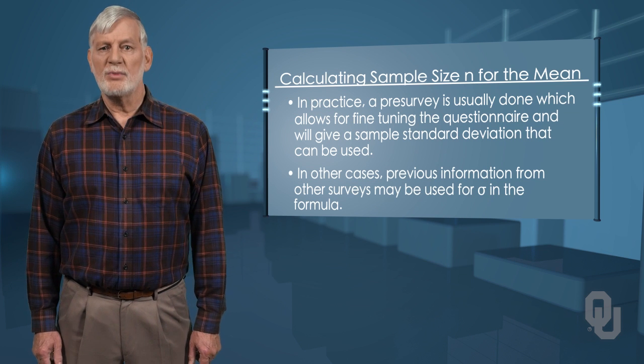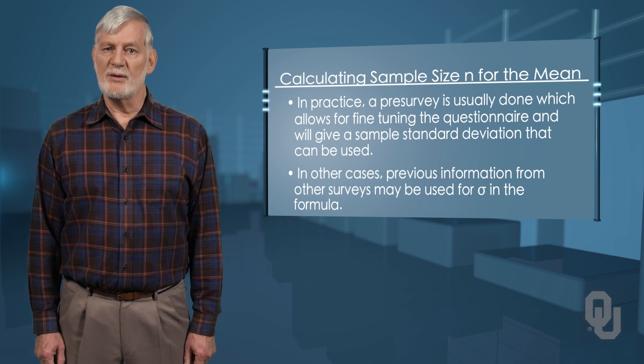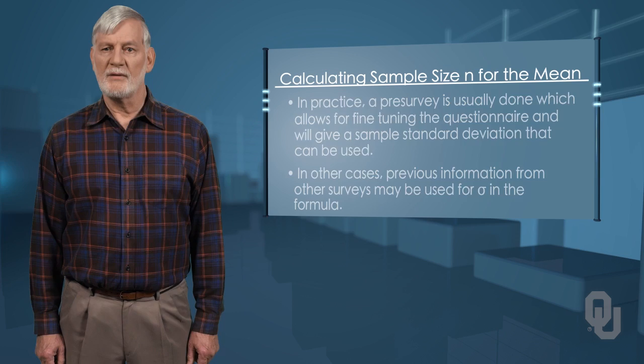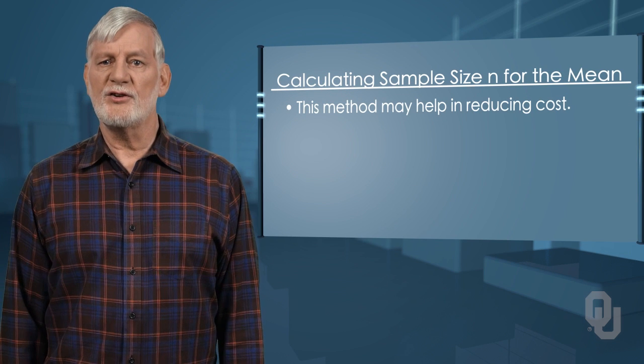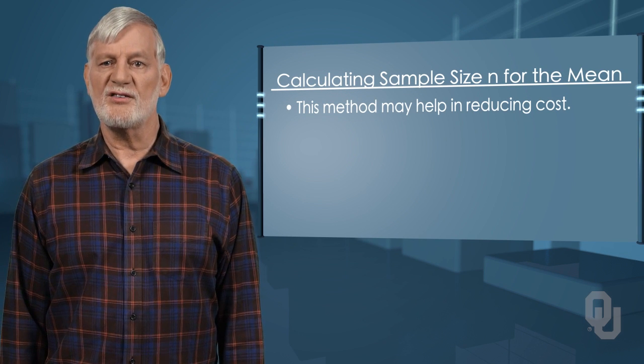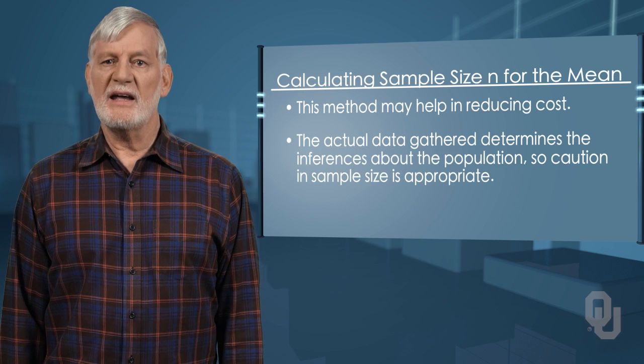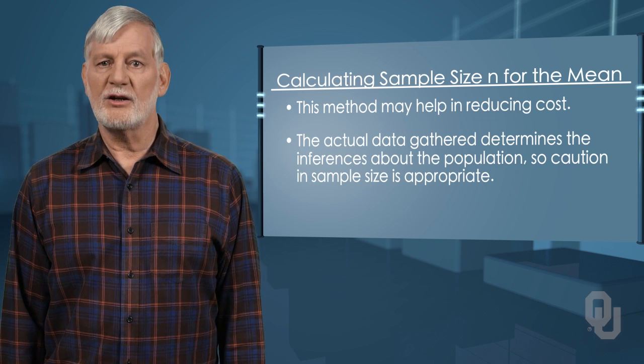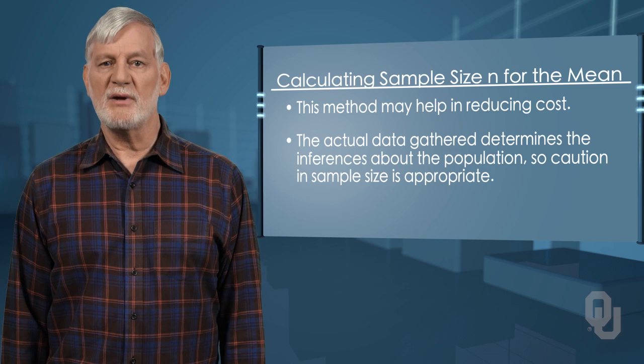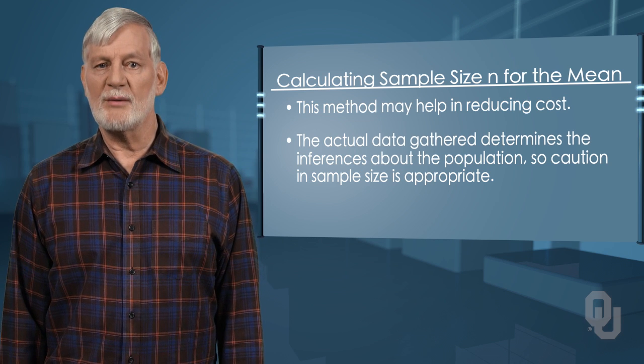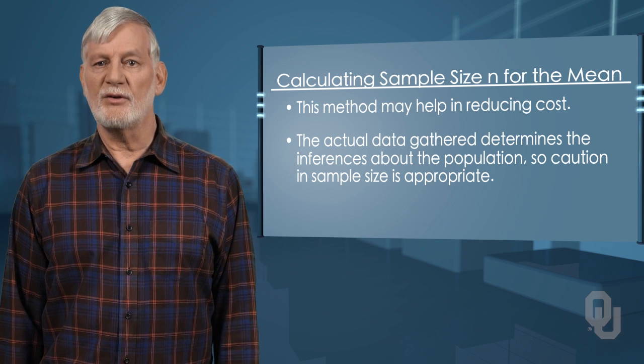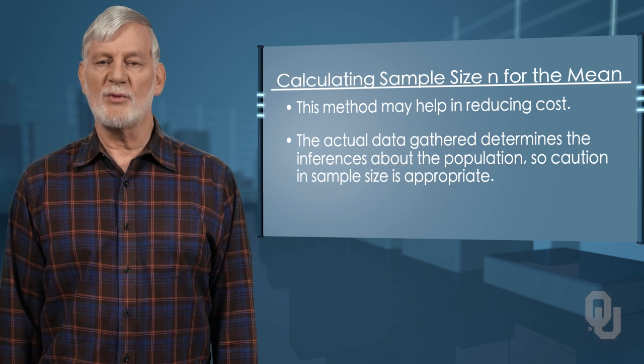In other cases, previous information from other surveys may be used for sigma in the formula. While crude, this method of determining the sample size may help in reducing costs significantly. It will be the actual data gathered that determines the inferences about the population, so caution in the sample size is appropriate, calling for high levels of confidence and small sampling errors.